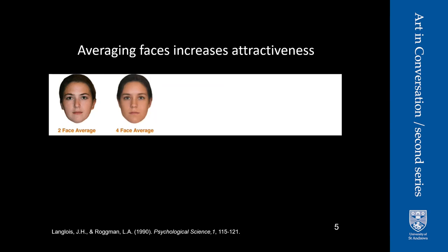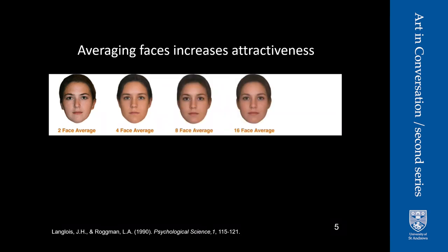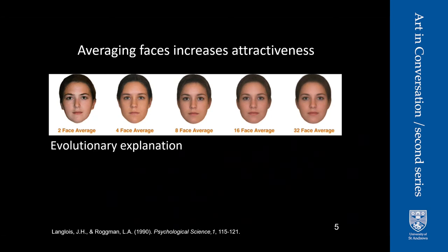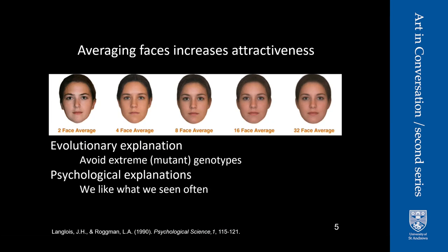Something that's been noticed for more than 100 years is that average faces are attractive. Galton noted this more than a century ago, and Langlois and Rogman argued that attractiveness is averageness. They noted that if you put 32 faces together, that was the most attractive composite, compared to individuals or even an eight-face average. There could be an evolutionary explanation — that if we're attracted to average, we would be avoiding extreme genetic mutations. There's also a psychological explanation: the mere exposure effect, where the more often you see something, the more positively you think about it.